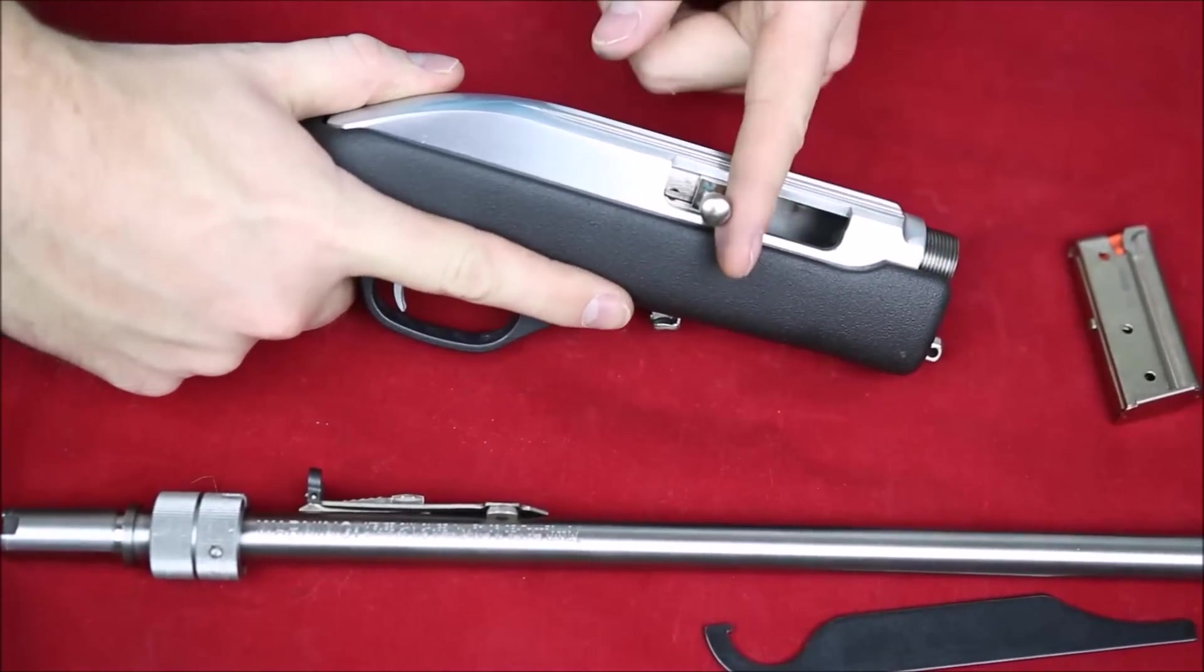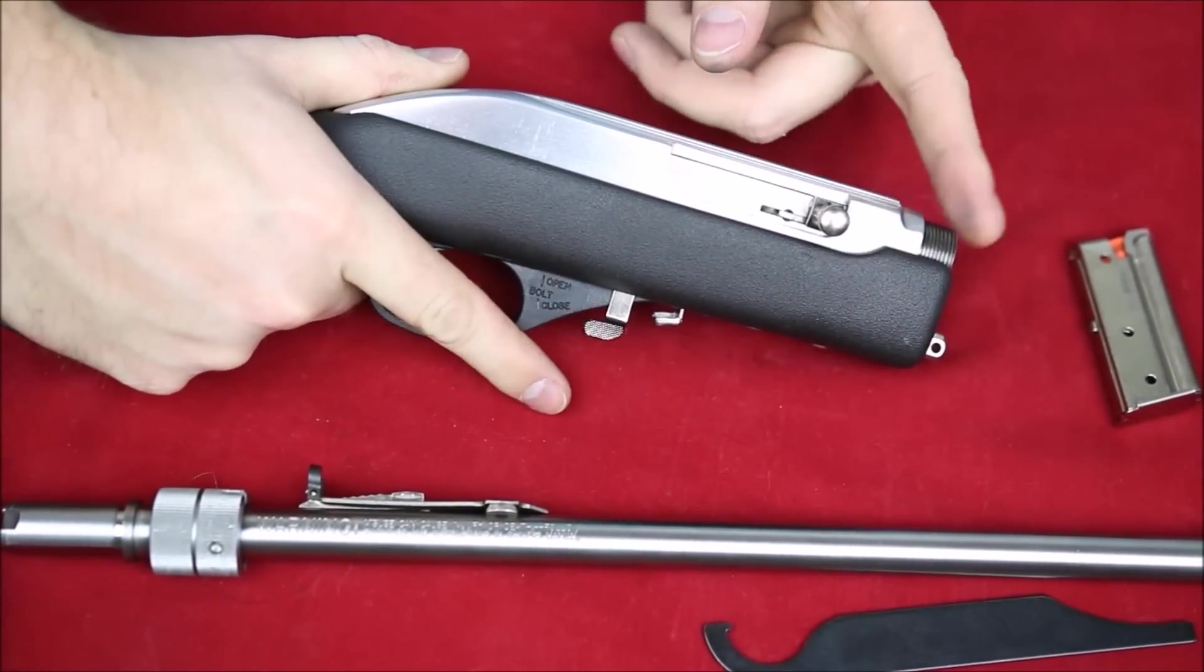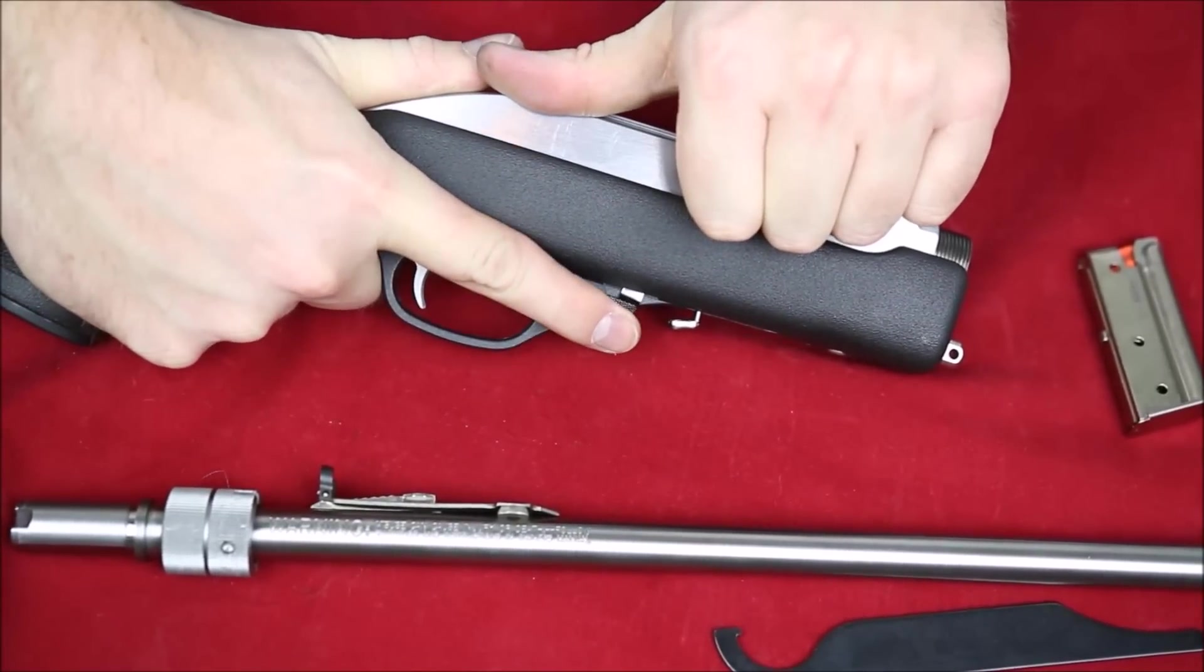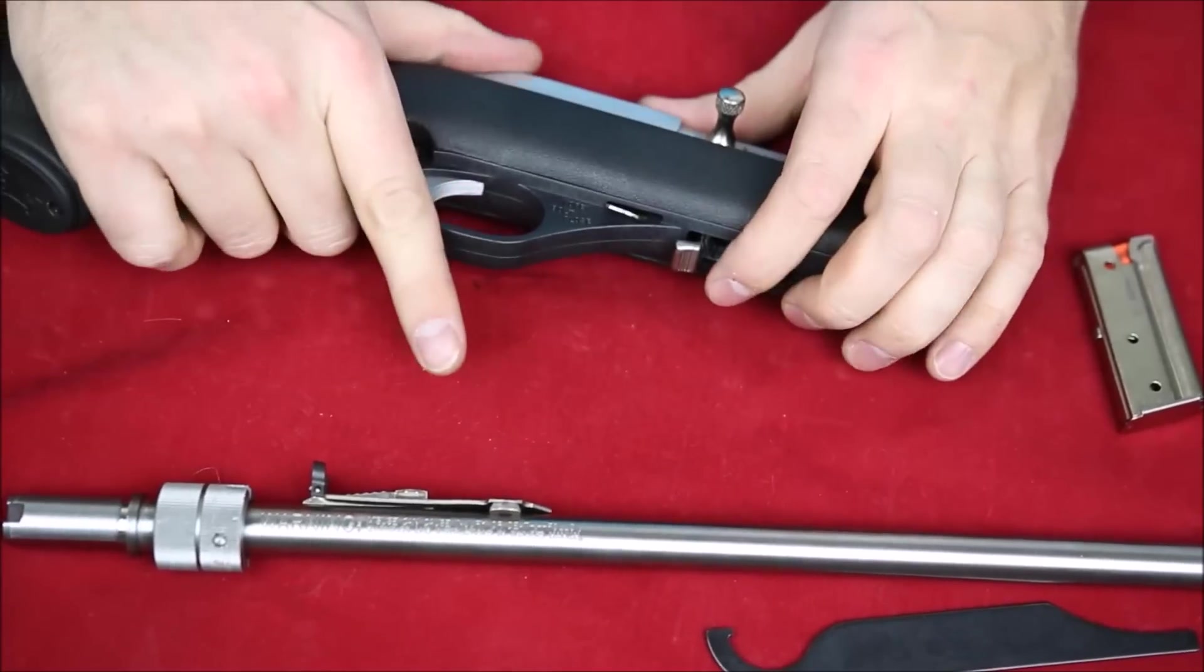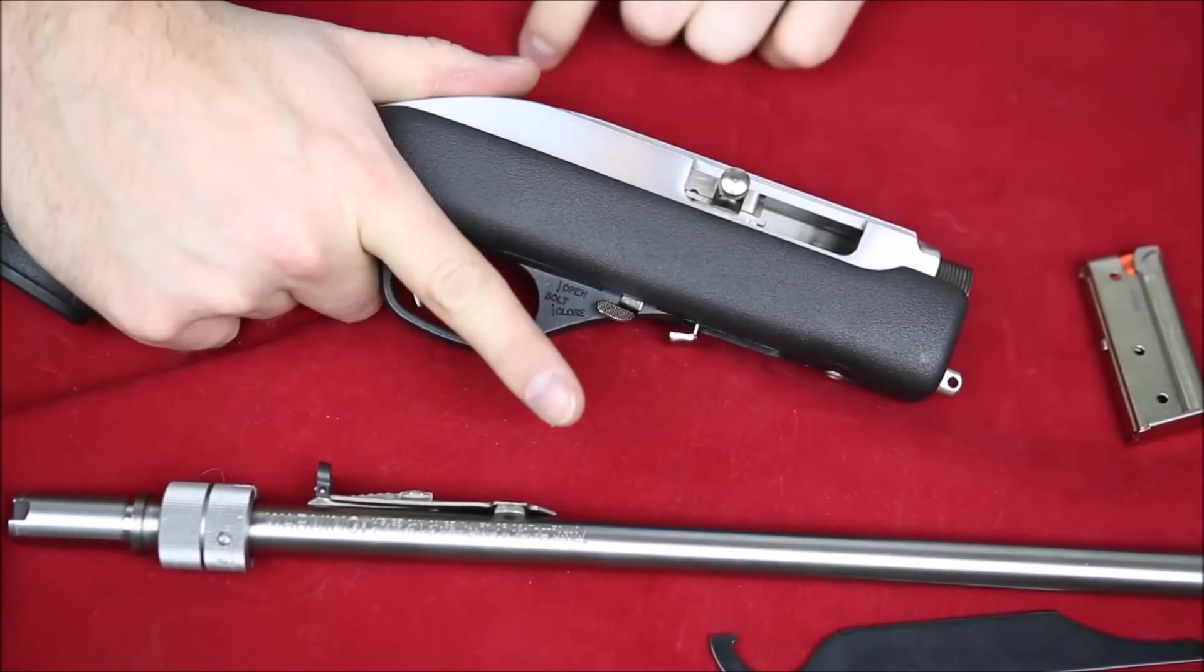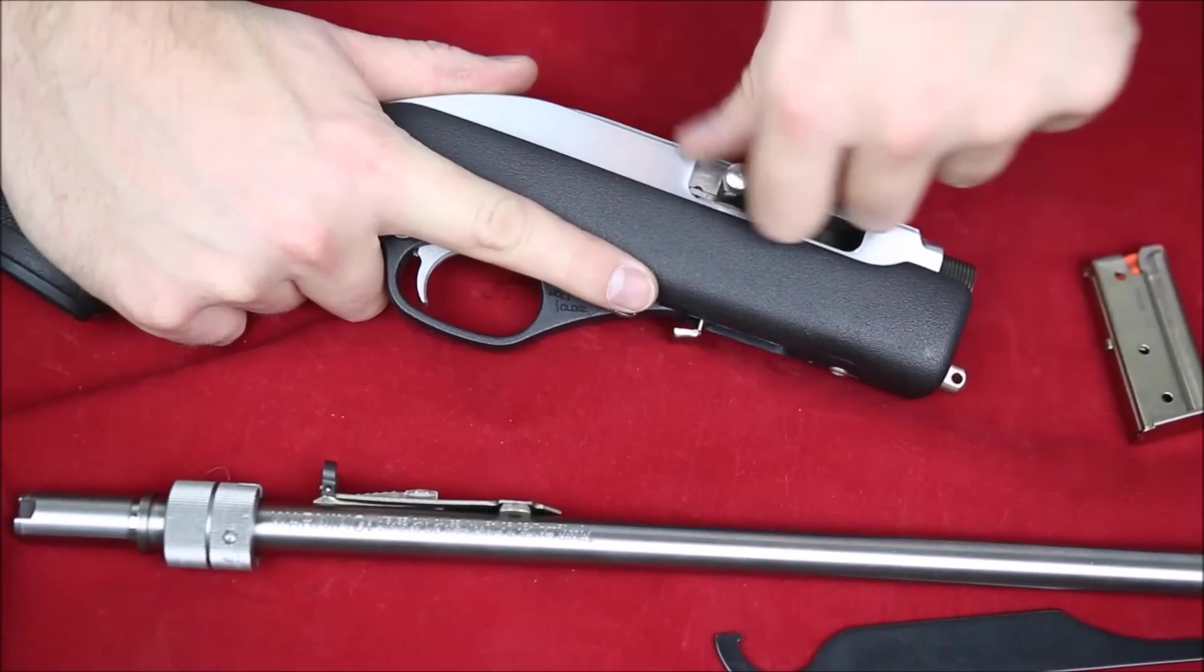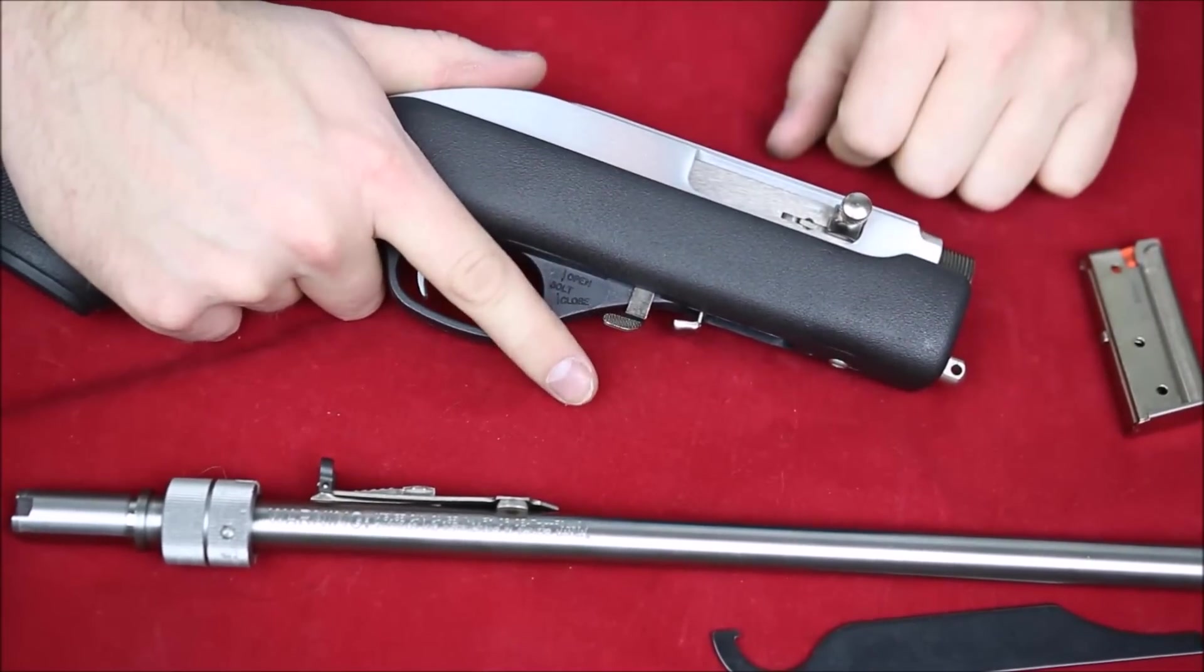The bolt release is right here, activated by using your right finger. I'm just going to hold the bolt here so it doesn't slam forward, but pressing that does that. If you want to lock the bolt to the rear, you just pull on the bolt, push that guy up, and then it'll catch the bolt. The end result is that you don't have to do the AK-47 thing where you rack it back just to drop the bolt.